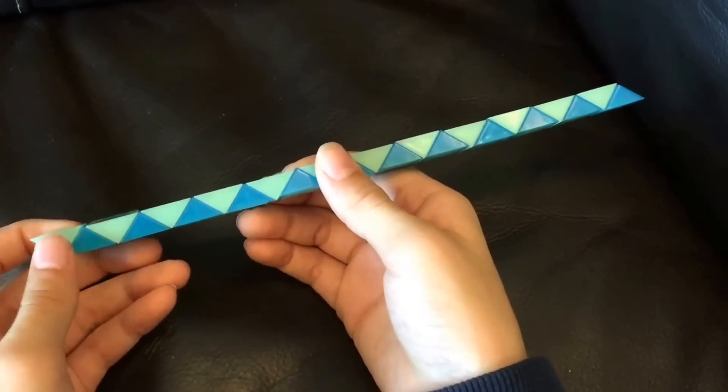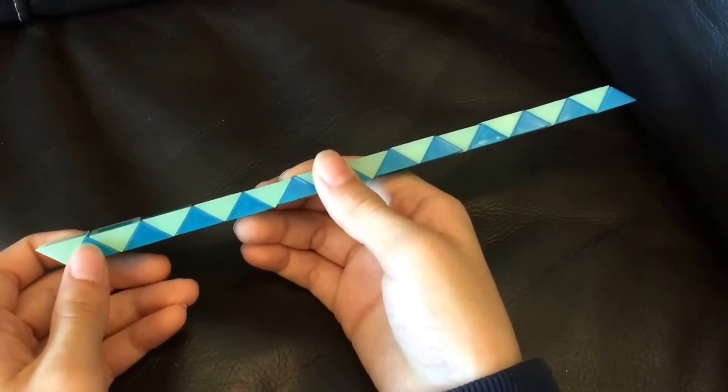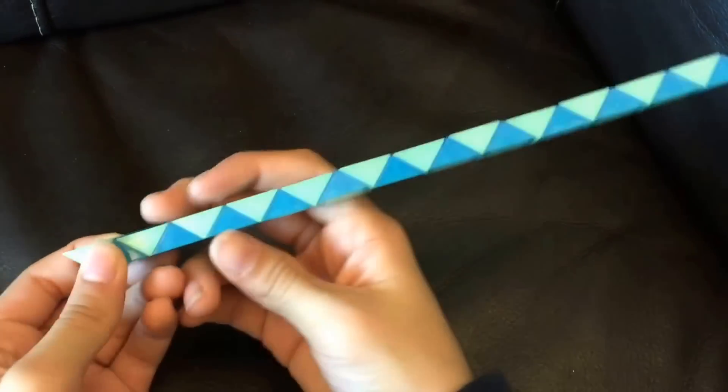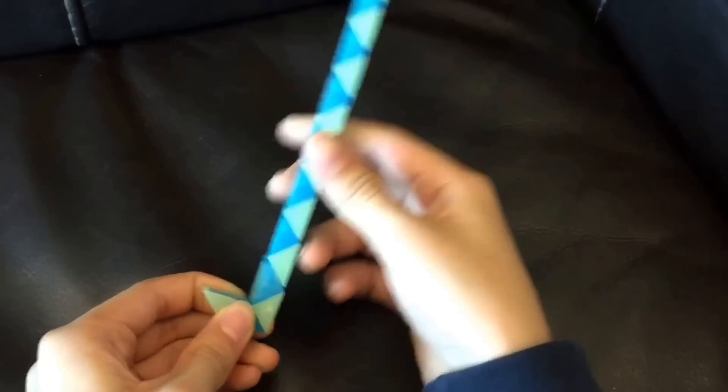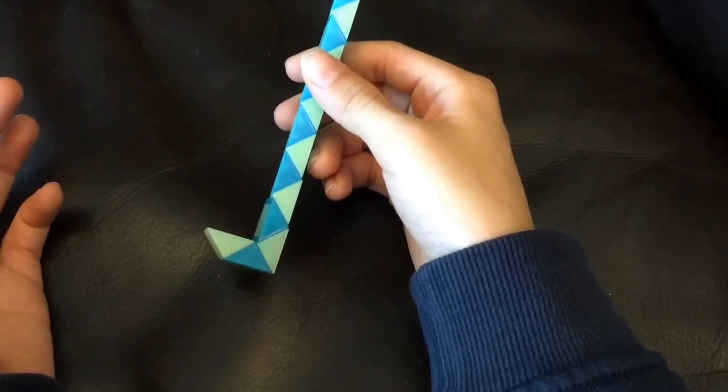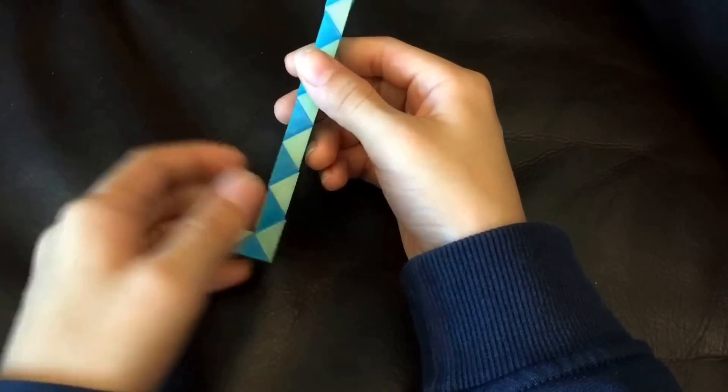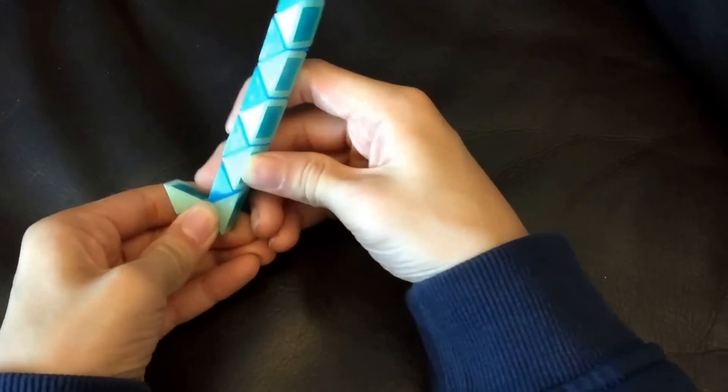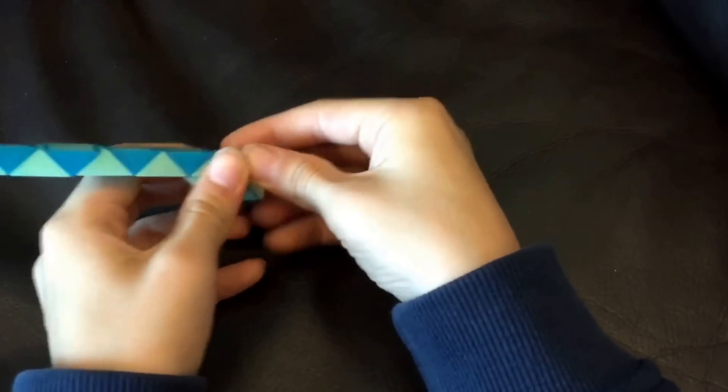So first you're going to count one, two, and then this white one is going to go up. And then this blue one is going to go left.